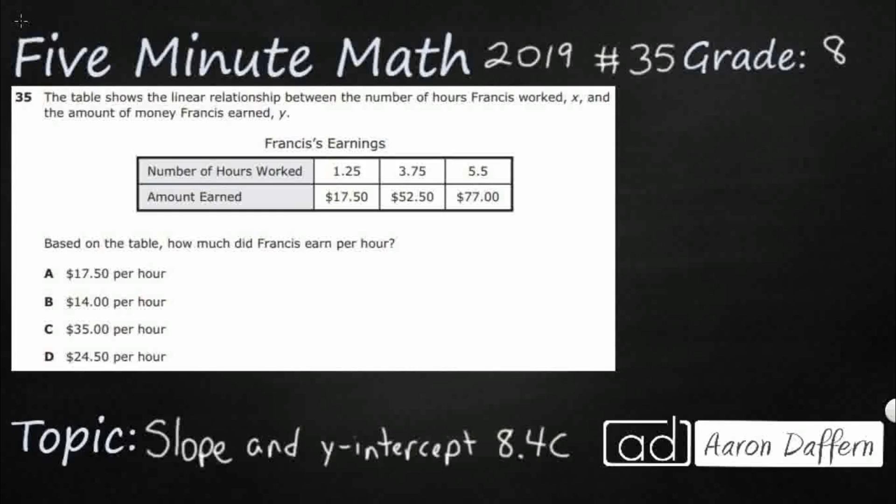So we have a table here. It shows the linear relationship between the number of hours that Francis worked, so I'm going to put an x right here, and the amount of money that Francis earned, y. Based on the table, how much did Francis earn per hour?